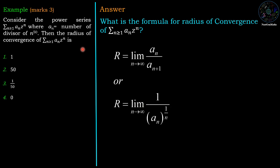We have two formulas: first formula is r equals limit n tends to infinity a_n divided by a_(n+1), and the second formula is limit n tends to infinity 1 upon a_n power 1 upon n.